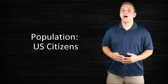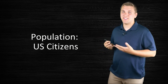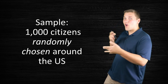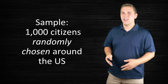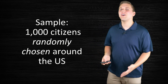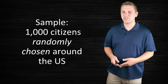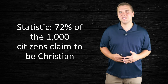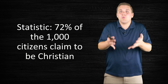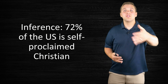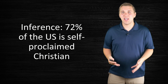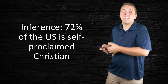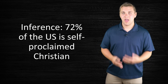Now let's do another example with the same population — U.S. citizens — but this time my sample is going to be 1,000 citizens randomly chosen around the U.S. What 'randomly chosen' means is a tricky question we'll discuss later, but let's say I picked 1,000 citizens completely randomly. The statistic here is that 72% of those 1,000 citizens claim to be Christian, and I project that onto the population — claiming 72% of the U.S. is self-proclaimed Christian. That would be an inference.